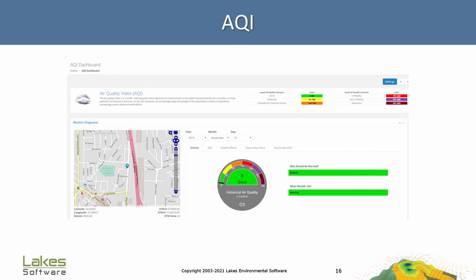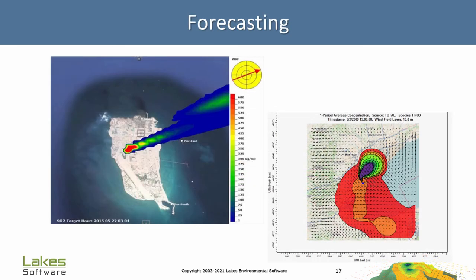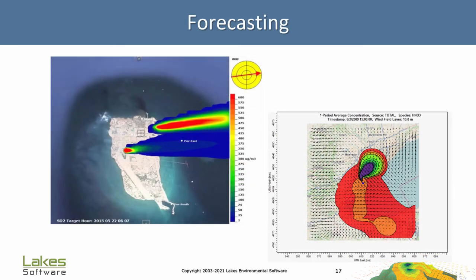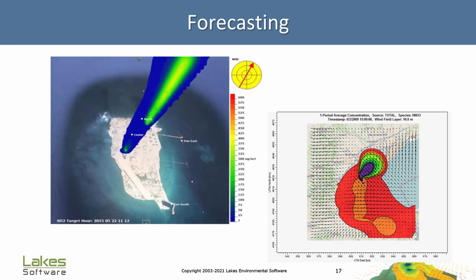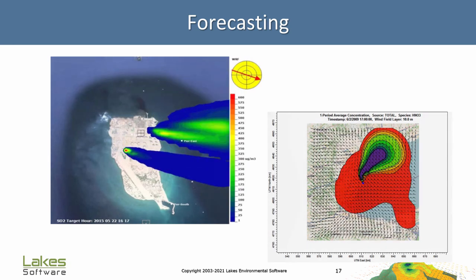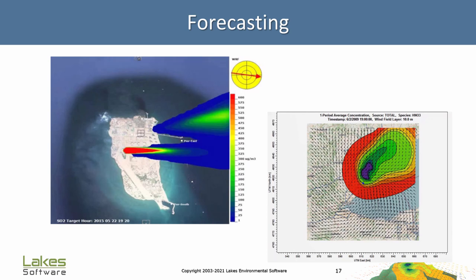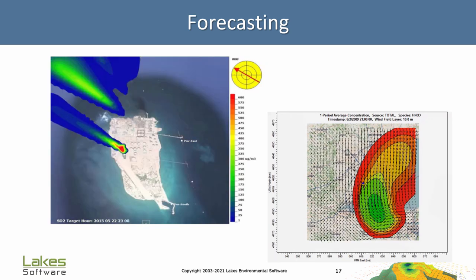The AQI dashboard can be made public so that everyone can see current and forecast AQI conditions. And just as we can forecast monitor conditions and AQI values, using prognostic meteorology from the WRF model, we can calculate and display forecasted ambient conditions with the AQMIS forecast dashboard.